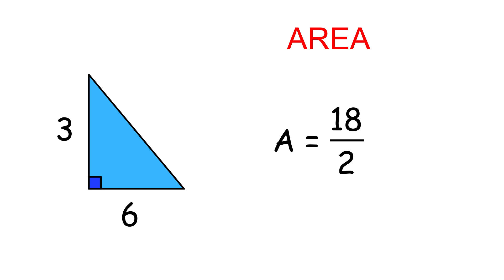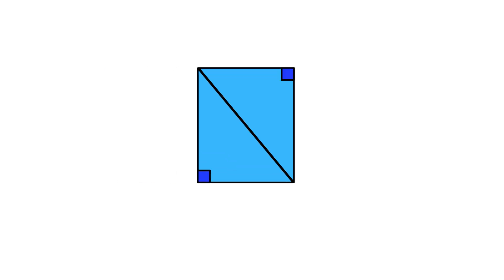18 divided by 2 gives 9 square units. Simple, right? That's because a triangle is just half of a rectangle.